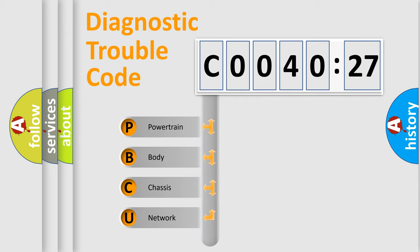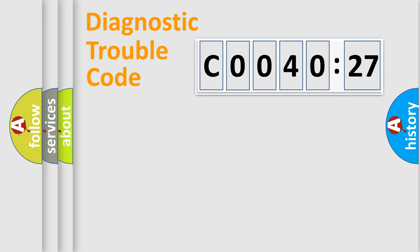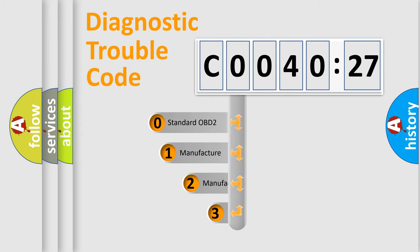We divide the electric system of automobile into four basic units: powertrain, body, chassis, and network. This distribution is defined in the first character code.